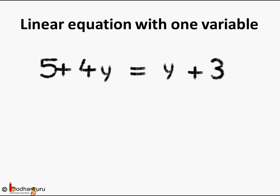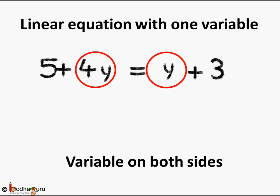What do you see here? This is also an equation with one variable, but what is the difference? Here we see the variable is on both the sides. See here, 4y on the left-hand side and y on the right-hand side. So let us solve this equation which has variable on both the sides.